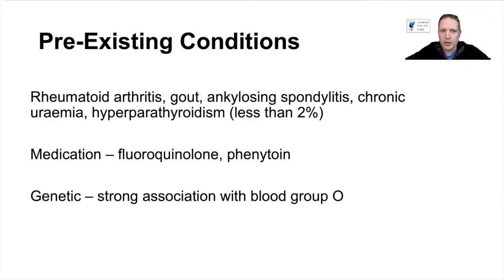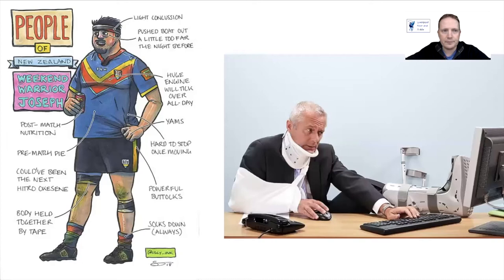Pre-existing conditions include rheumatoid arthritis, gout, ankylosing spondylitis, chronic uraemia, and hyperparathyroidism, though this accounts for usually less than two percent. Medications such as fluoroquinolones and phenytoin are specific causes and usually present with bilateral pain rather than one side. The pharmacist will usually explain that fluoroquinolones can cause this before giving the medication. Genetically, there is a strong association with blood group O, but we do not know why.